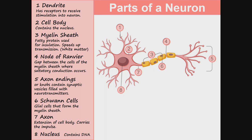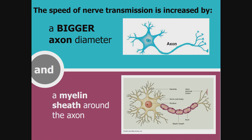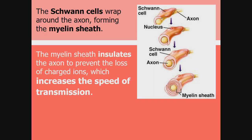The nucleus contains DNA. The direction of nerve impulse travels from the cell body to the axon endings. The speed of nerve transmission is increased by two things: a bigger axon diameter and a myelin sheath around the axon. The Schwann cells wrap around the axon forming the myelin sheath. When it is done wrapping, it is called the myelin sheath, which insulates the axon to prevent the loss of charged ions, thereby increasing the speed of transmission.